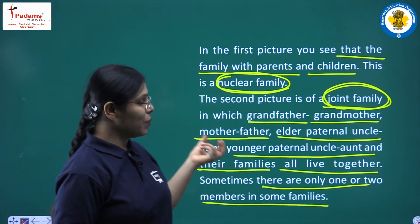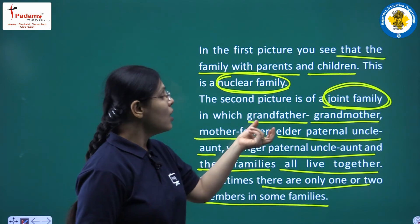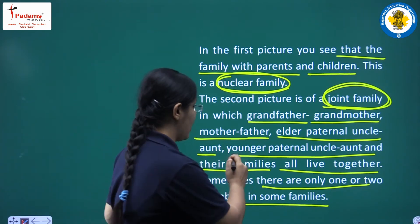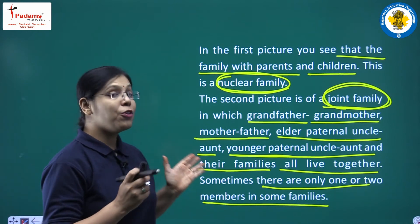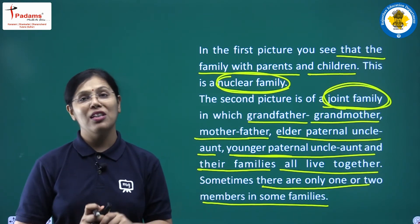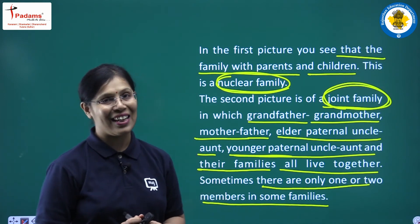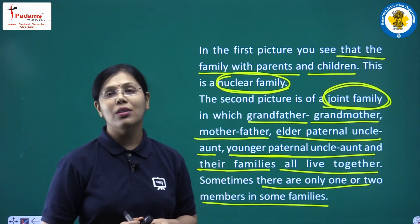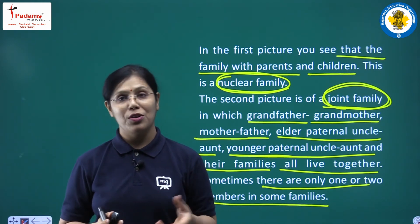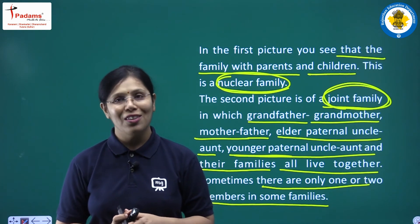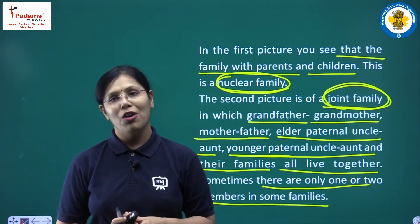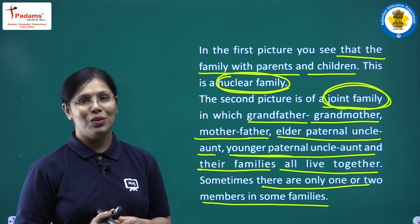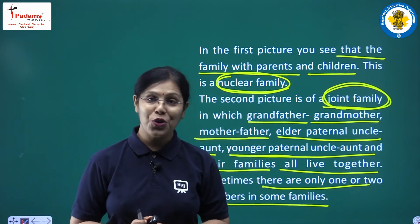In a joint family you can see mother, father, grandparents, elder paternal uncle, aunt, younger paternal uncle, aunt — that is chacha, chachi — and all their children, everyone living together. We should also remember that some families have only one or two members due to various reasons. So there are different kinds of families, but the two major types to remember are nuclear family and joint family.